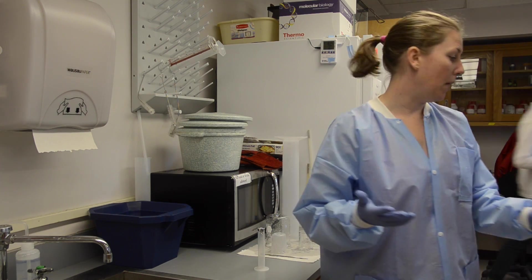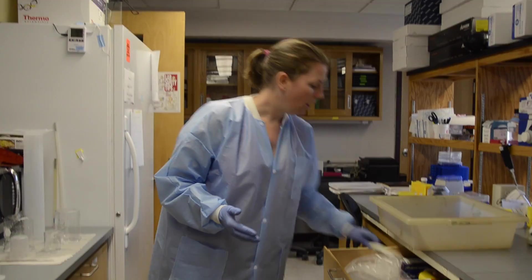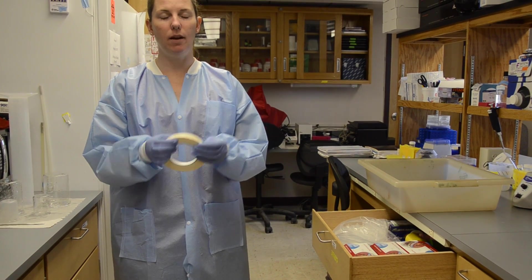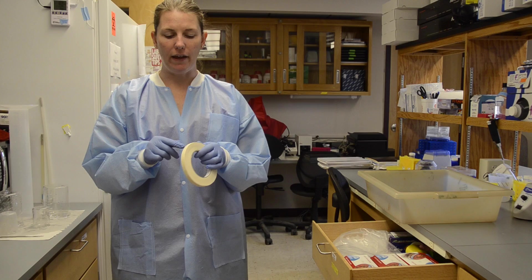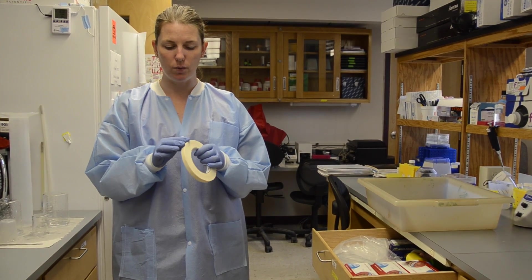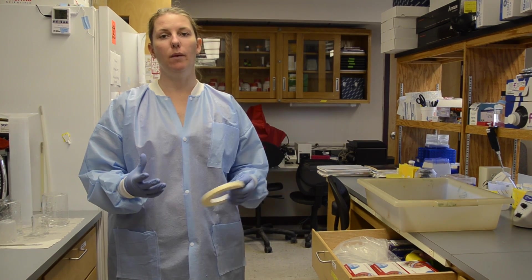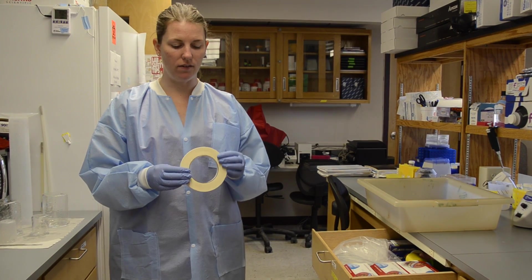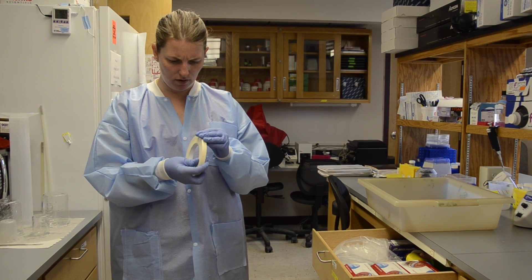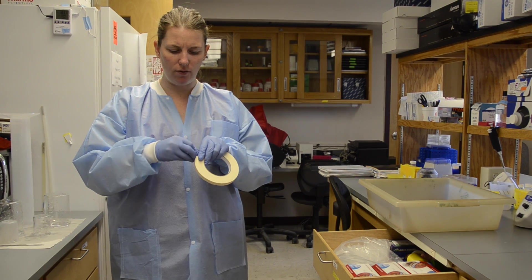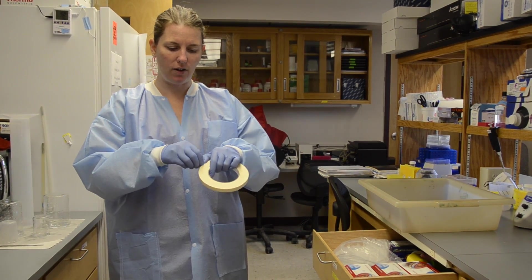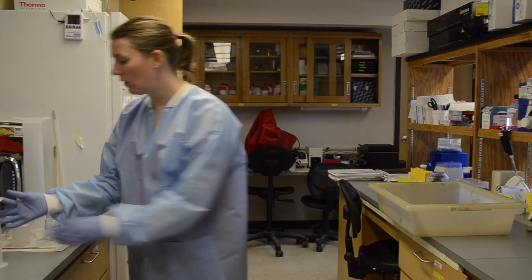Then we're going to grab some autoclave tape from this drawer. Basically it has temperature sensitive chemical reactions that turn these white lines into black lines if it gets over 120 degrees, which is what the autoclave will do. We do this so that we can get rid of the RNases and DNases. All you need is a very small piece of autoclave tape just to indicate that it's actually been autoclaved.